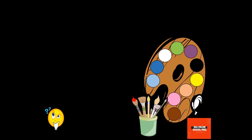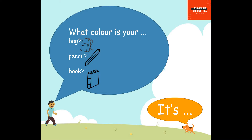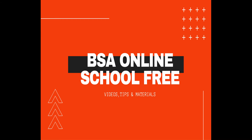It could also be gray, black, or brown. If you mix all the colors, you will get one color — back to black! It's black. Is your pencil black? It's your book — it's green, it's white, it's brown, it's pink. It's green, it's white, it's brown, it's pink.